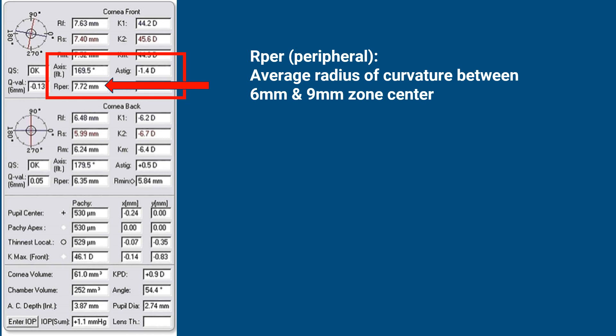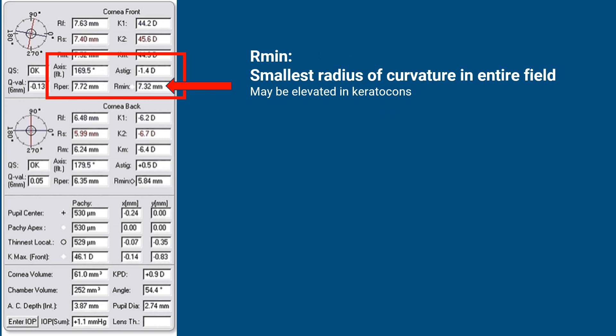RPR is the average radius of curvature between the 6 mm and 9 mm zone. We usually don't include it in indices and calculations. R minimum is the smallest radius of curvature in the entire field; it may be elevated in keratoconus but is not included in the calculations.